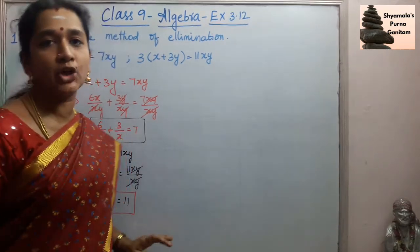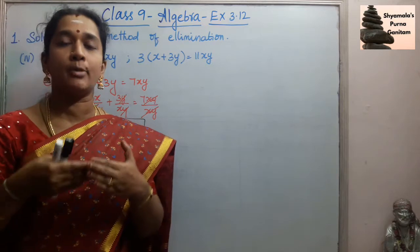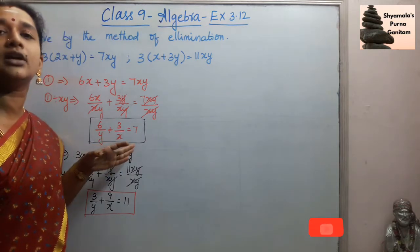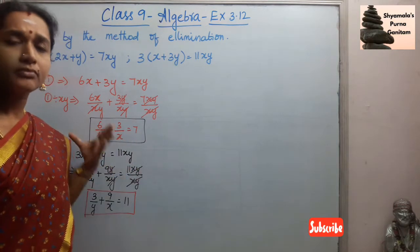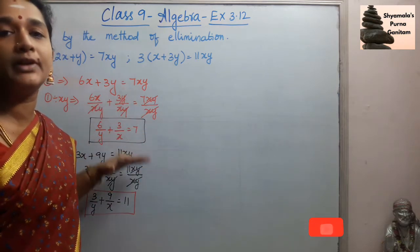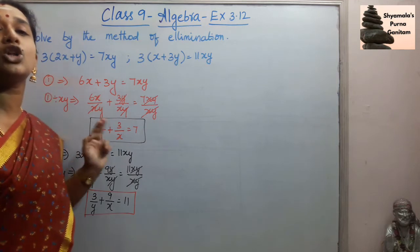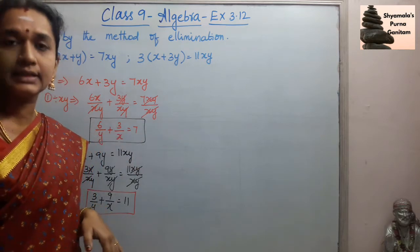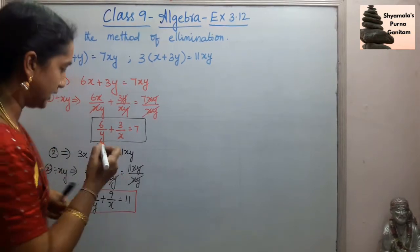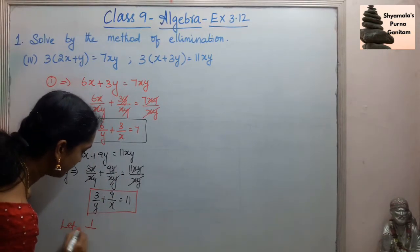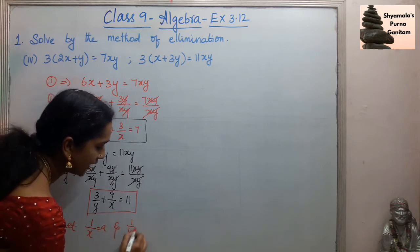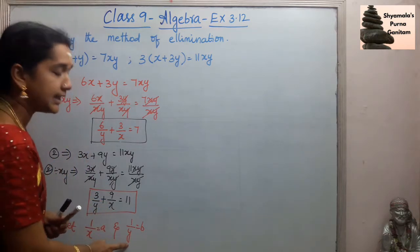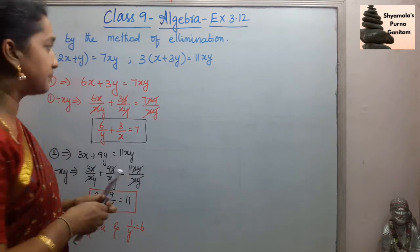In previous sums we did not have variables in the denominator, so we found the LCM and simplified. But here the denominator contains variables x and y, making it difficult to solve directly. So instead of 1/x we take a new variable: let 1/x = a and 1/y = b. In both equations we will substitute — replacing 1/x with a and 1/y with b.